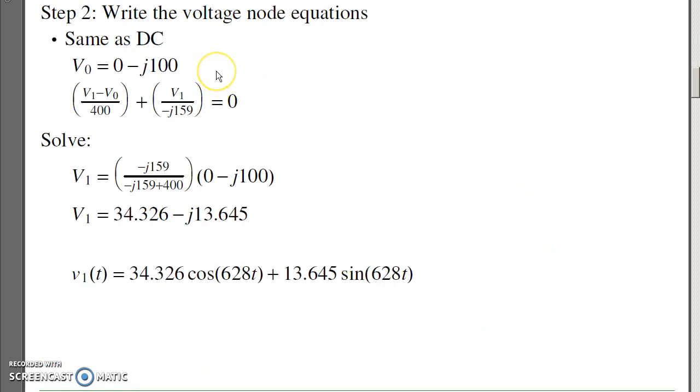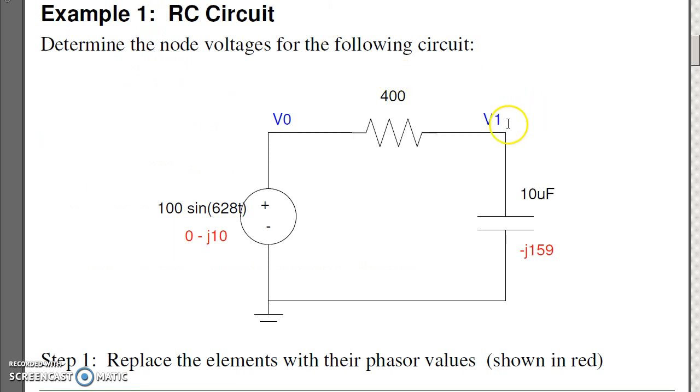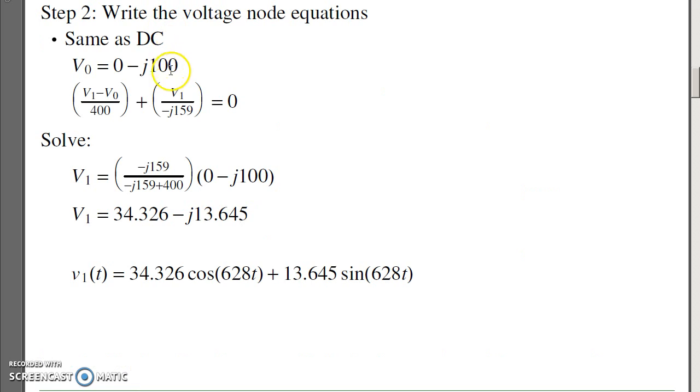I now write my voltage node equation. The V0 is 0 minus j100. At node 1, the current left plus the current down equals 0. At node 1, the current left is V1 minus V0 over 400, plus the current down, V1 minus 0 over minus j159. That has to equal 0. I can now solve. A little bit of algebra gives you that V1 is 34 minus j13.